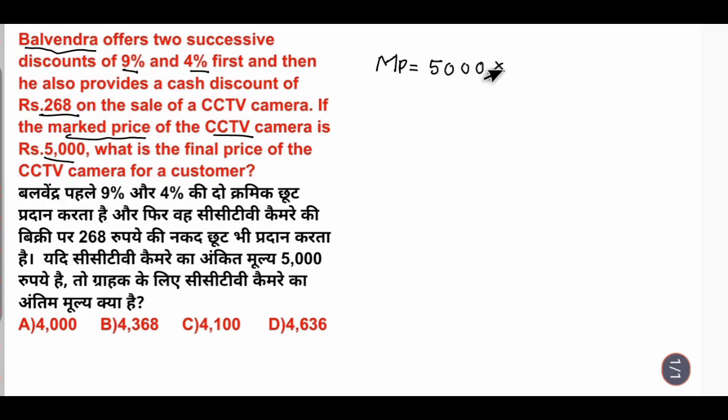We have already given the discount, 9% discount on the price of the CCTV camera, so we have done the 9% discount. 5,000 times 9 divided by 100, so in the remaining Rs. 5,000, we have made a discount which is Rs. 450.